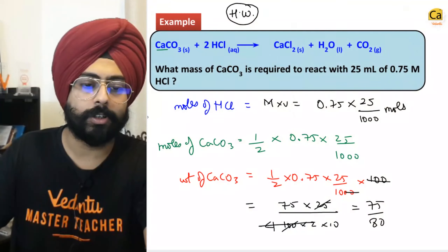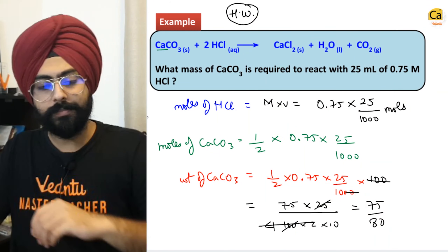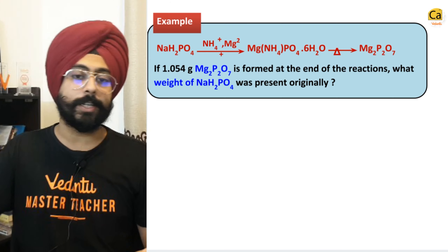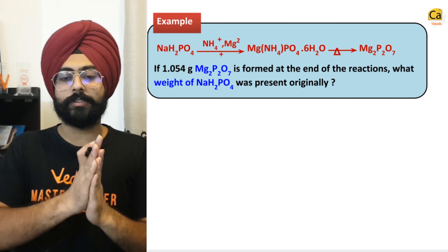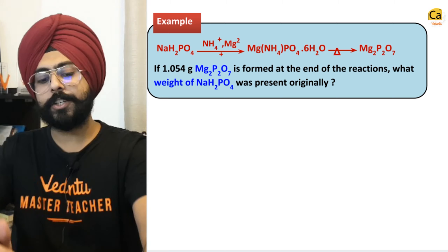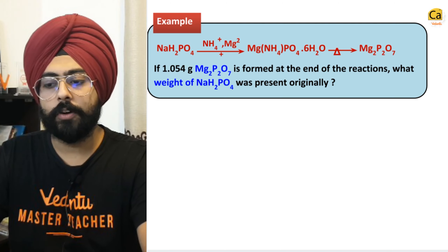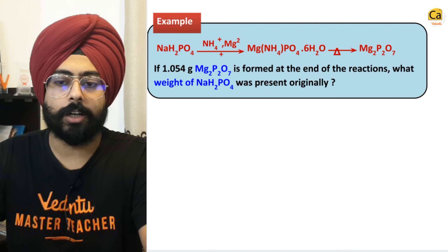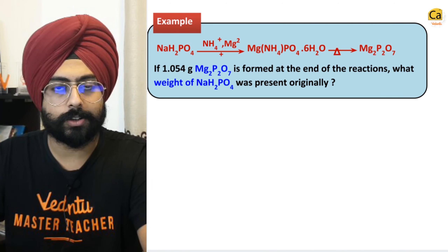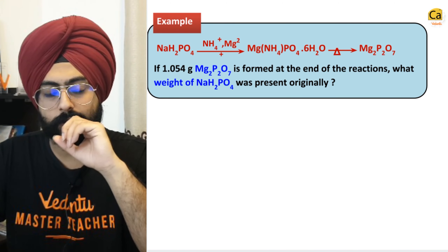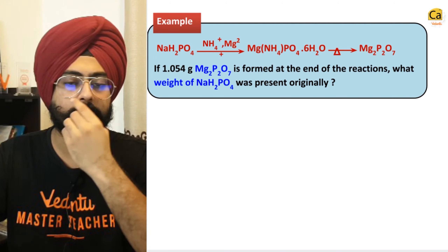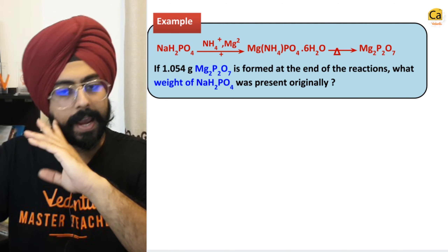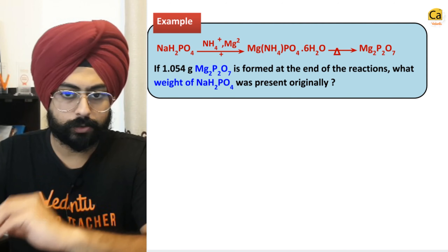Now let's get back to the Principle of Atomic Conservation and try to figure out the answer to this question. What's given is NaH2PO4, which is being combined with NH4⁺ and Mg²⁺.